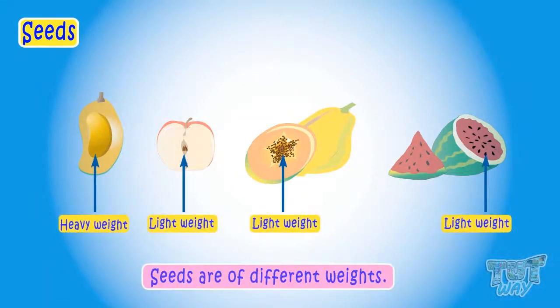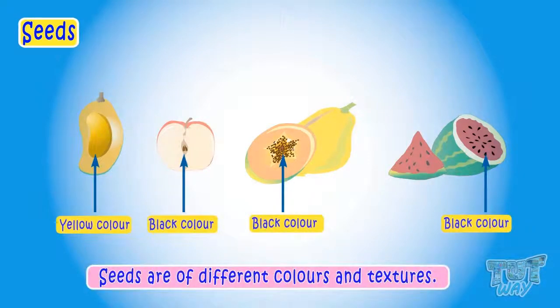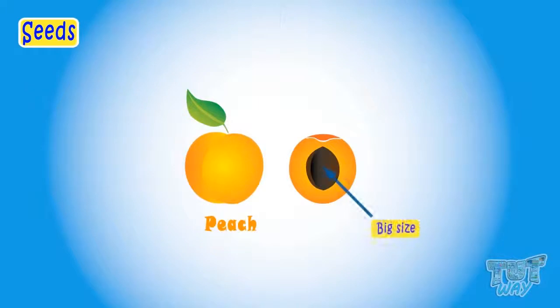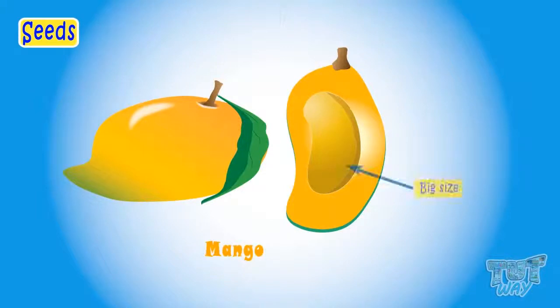Seeds come in different sizes, weights, colors, and textures. Here are a few seeds. Apple has small seeds which are light in weight and black in color. Peach has a big seed which is heavy and brown. Mango too has a big heavy and white seed.